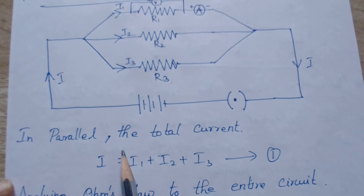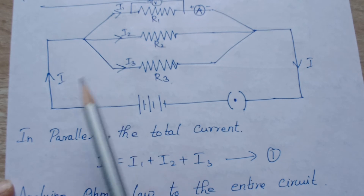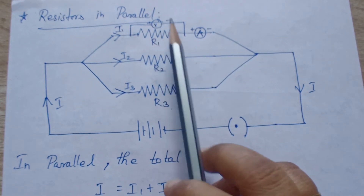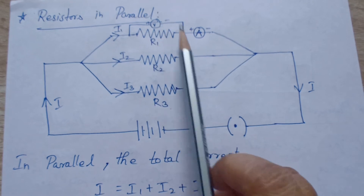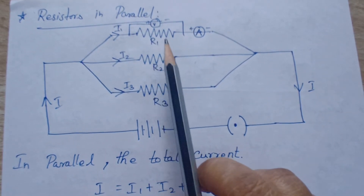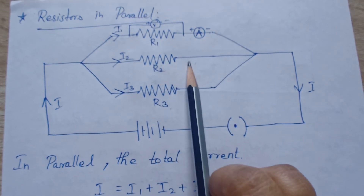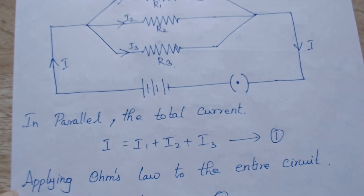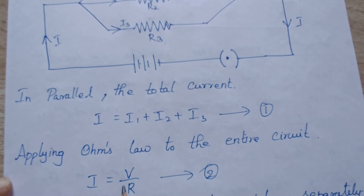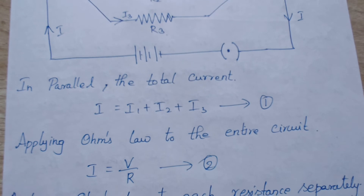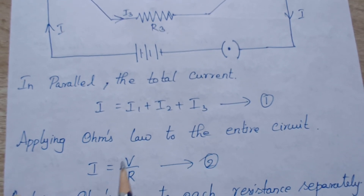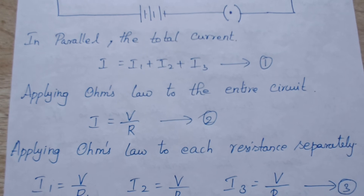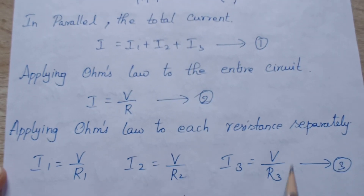In parallel, applying Ohm's law to the entire circuit: V equals IR, which rearranges to I equals V by R. Applying Ohm's law to each resistance separately: I1 equals V by R1, I2 equals V by R2, I3 equals V by R3. You can measure the current in each branch using an ammeter — the voltmeter reading stays the same but the current will vary across branches.